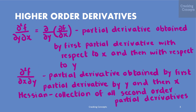∂²f/∂y∂x can be written as ∂/∂y of (∂f/∂x), which is the partial derivative obtained by first differentiating with respect to x and then with respect to y. ∂²f/∂x∂y is the partial derivative obtained by first differentiating with respect to y and then with respect to x.